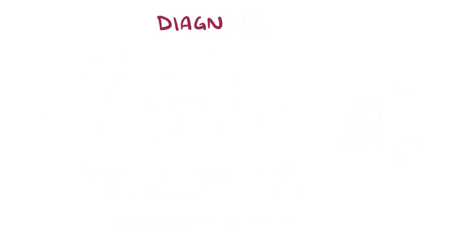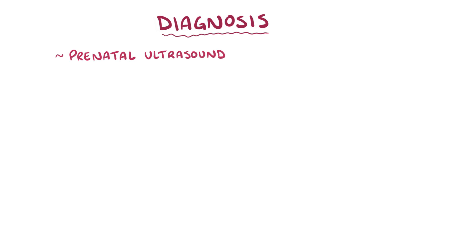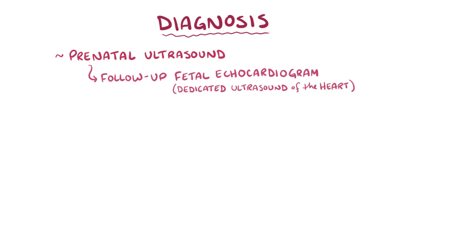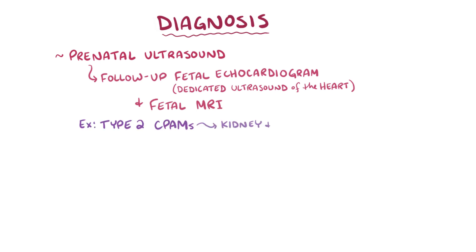Most CPAMs are diagnosed on prenatal ultrasound, and if one is seen then there's typically a follow-up fetal echocardiogram, which is a dedicated ultrasound of the heart, as well as a fetal MRI to look for any associated malformations. As an example, type 2 CPAMs are often accompanied by kidney and heart defects.